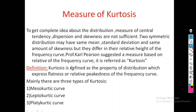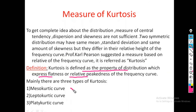Kurtosis is defined as the property of a distribution which expresses the flatness or relative peakedness of the frequency curve. Based on this definition, there are three types of kurtosis: mesokurtic, leptokurtic, and platykurtic.